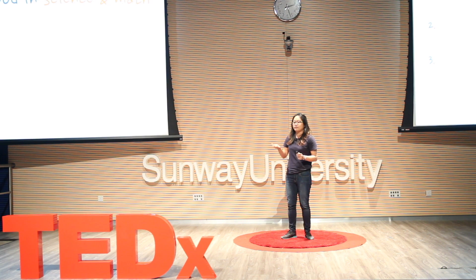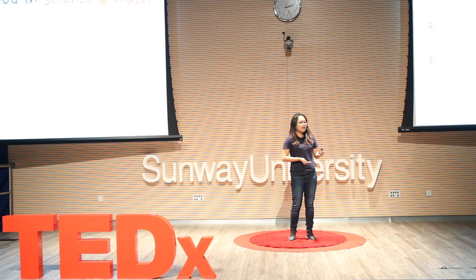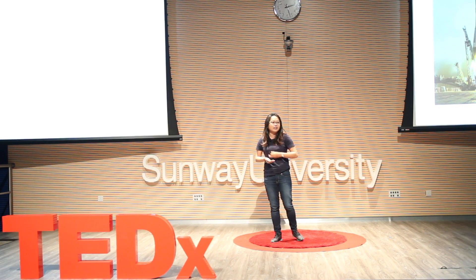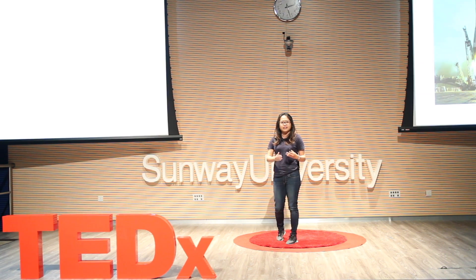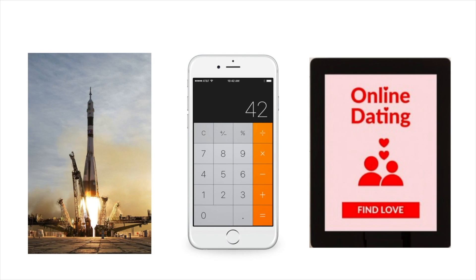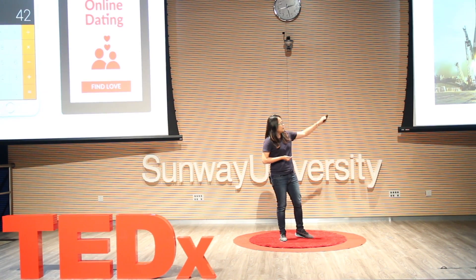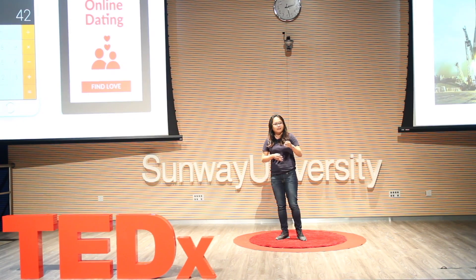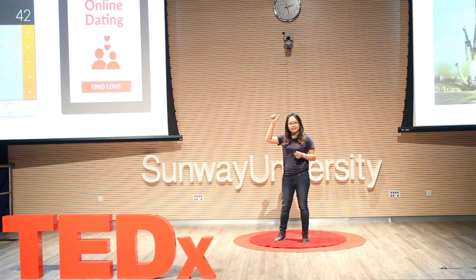One common myth is: 'I need to be good at science and math, so if I'm not good at those I can't code.' That's true if you're building a rocket — you need heavy calculations so you don't put lives at risk. But if you're building a simple calculator app or an online dating app like Tinder, how much math do you really need? For a calculator you need to know addition, subtraction, and multiplication — which most of us already know. For a dating app, you mainly need to know how to do animations.